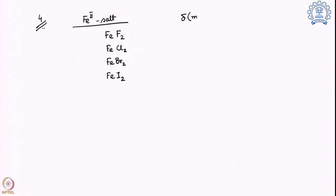And if I look into the delta value for these salts they are as following: 1.40 for iron fluoride, 1.20 for chloride, 1.15 for bromide and 1.10 for iodide. We can see as we move from the fluoride to iodide we are slowly moving towards the more negative direction of delta values.